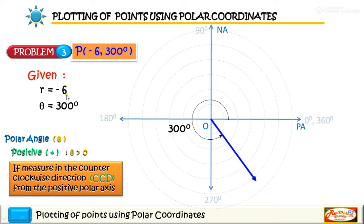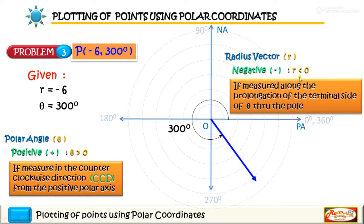Now if we observe, R is negative 6. Since R is negative 6 and that is less than zero, we will measure the radius negative 6 along the prolongation of the terminal side through the pole. Meaning to say, we will measure the radius vector opposite of this terminal side or this line. Okay, so since R equals negative 6, we will lay off on this line 6 units distance.